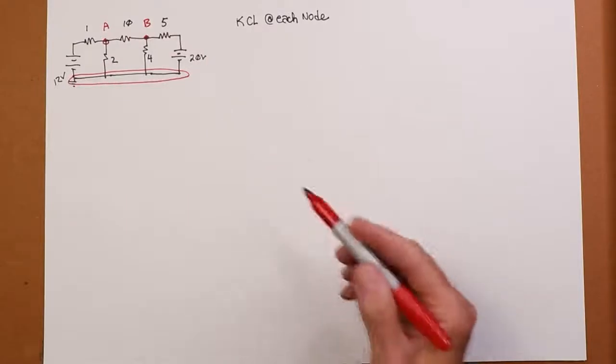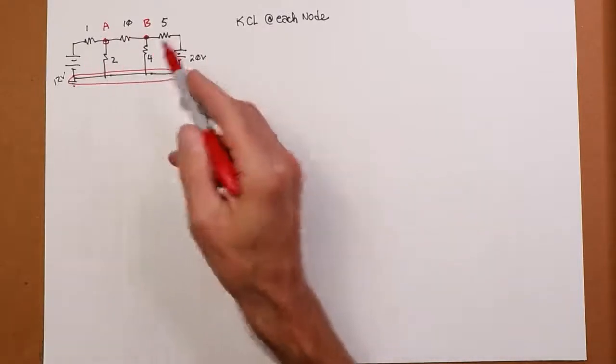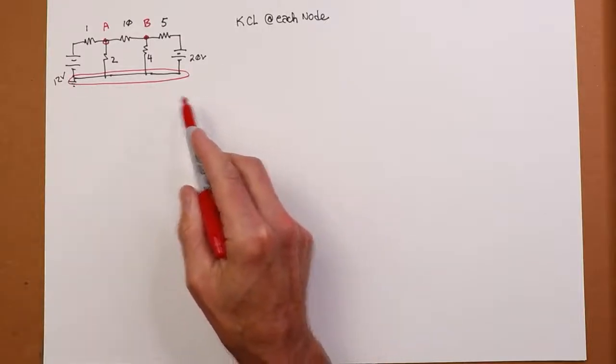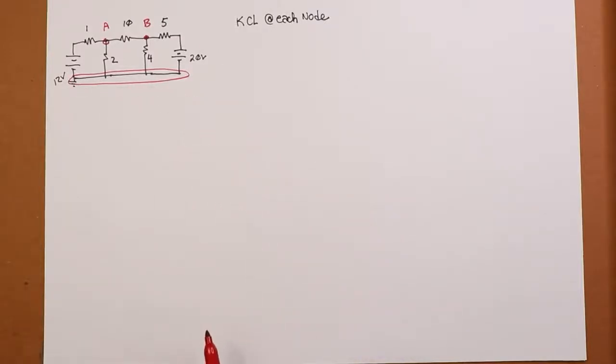So you write a KCL summation. First, we have to identify the nodes. First, we have a reference node, which is going to be ground. And then other places where wires connect, where currents can combine or split. Right here, we'll call that node A. Right here, we'll call that node B. So those are our nodes.